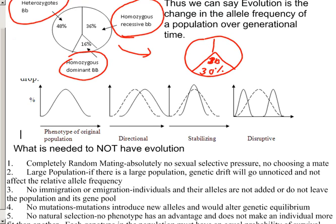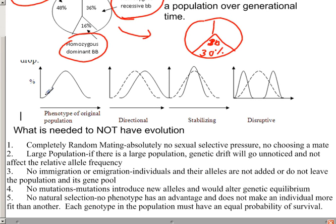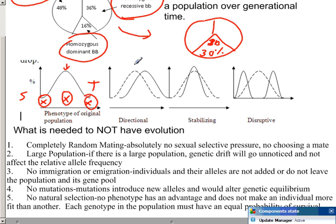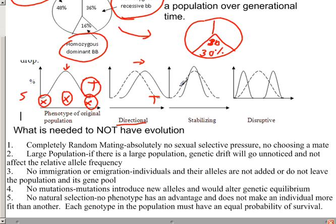This change in allele frequency can happen in a few different ways. We can have directional selection, where if being tall is advantageous, the population shifts toward that trait over time. We have stabilizing selection, where a trait is strongest toward the middle ground and the population's traits move inward. And finally, we have disruptive selection, where the two extreme versions of a trait are both selected for.